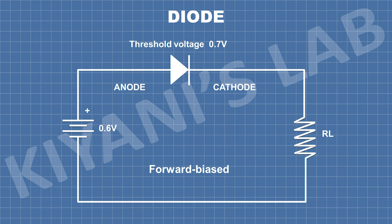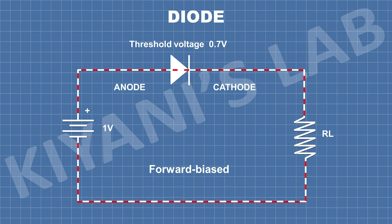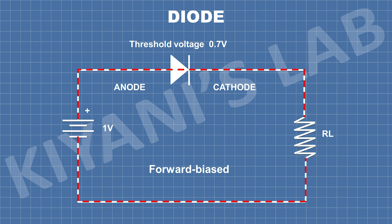Every diode has a threshold voltage. In this example, our diode has a threshold voltage of 0.7V. If we connect a diode in forward biased and apply voltage less than the threshold voltage, the current will not flow through the diode. But if we apply voltage more than the threshold voltage, the current starts flowing through the diode. So in forward biased, we need to apply voltage more than the threshold voltage.